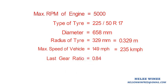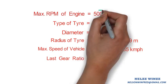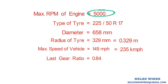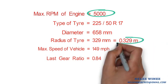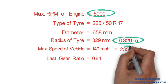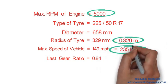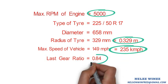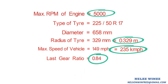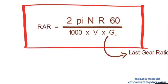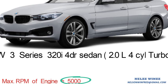Now we need the RPM value, tire radius, maximum speed, and gear ratio for this theoretical calculation. Let's fix these values into the earlier formula and do the math.